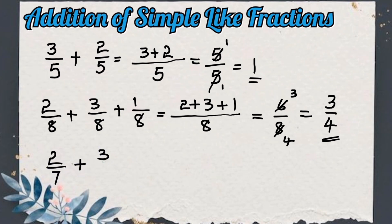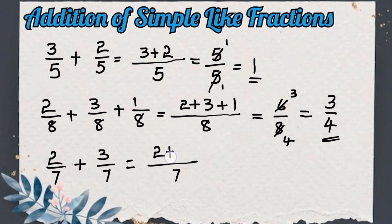Now in the next example let us add 2 by 7 and 3 by 7. Here again the denominators are the same, so we will write the same denominator 7 and only add the numerators: 2 plus 3 is 5. We will get 5 in the numerator and 7 in the denominator, so this fraction became 5 by 7.